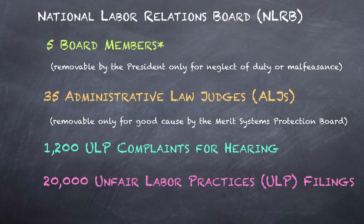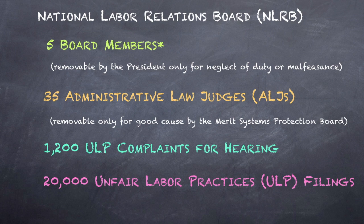Notice the double layer of for-cause protection. Recall that the constitutionality of this double layer is in question in the aftermath of Free Enterprise Fund and Lucia. By executive order, President Trump declared the entire corps of federal ALJs exempt from the competitive civil service — but a short step from declaring ALJs as officers of the United States subject to the president's plenary power of dismissal, precisely what Chief Justice Taft declared in dictum in Myers.